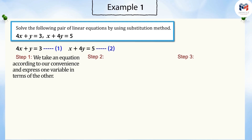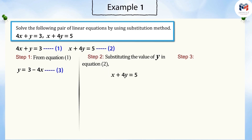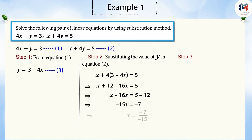Here we take equation one and express y in terms of x, and denote it as equation three. In the second step, we substitute the value of y obtained from equation one into equation two. Solving it further, we get x is equal to seven by fifteen.